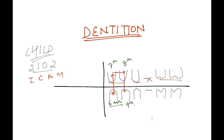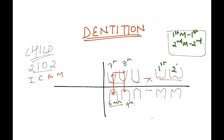So these four incisors are clear. Then remember: the first molar at the first year, and the second molar at the second year. What remains is the canine, which falls midway at 1.5 years. So the sequence is: lower central incisor at six months, then seven, eight, nine months for the other incisors, then first molar at year one, canine at 1.5 years, and second molar at year two.